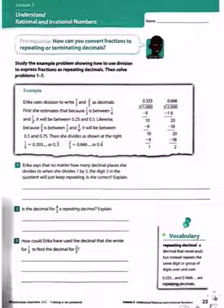If we look up at the example at Erica's problem, you can see that the number 3 in the quotient, quotient means answer, goes on and on and on. So yes, she is correct.